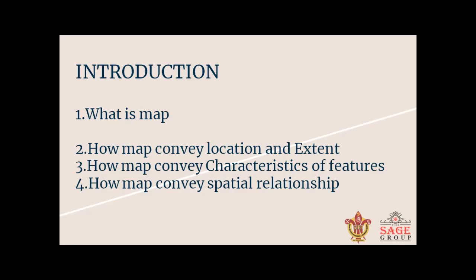Then come to the next point: characteristics. For example, take a road — Mahatma Gandhi Road. What type of road is it? Is it a national highway, a state highway, or a service road? You find the detail of that particular road. Then, what is spatial relationship? Suppose you take the example of Parliament House — by which road is it connected and how can we reach Parliament House? These three characteristics are very helpful to explain everything about a particular map in a 2D manner.